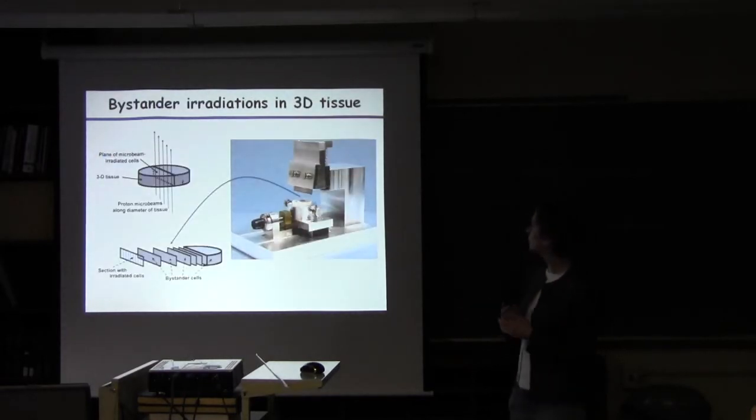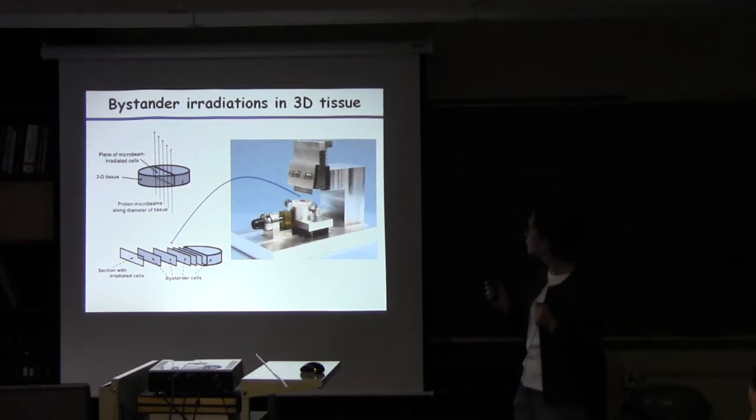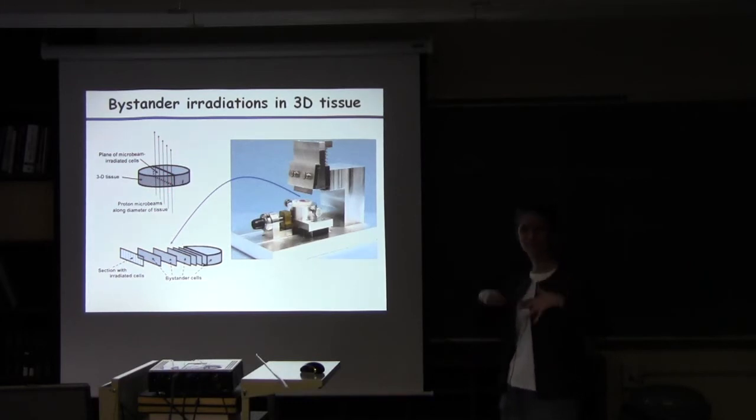And so then what we've done in some of the subsequent slides that I'll show you is we've aligned the microbeam and shot along the central axis through the middle of the tissue like this, so that we've created a plane of microbeam irradiated cells. And I think everything I'm showing you here is from protons, which will go pretty much through the tissue.